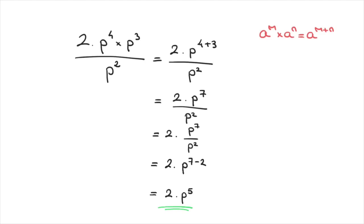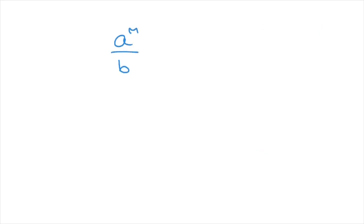Notice that the division rule — a to the power of m over a to the power of n equals a to the power of m minus n — deals with powers of the same base. But what happens when we divide powers of different numbers? If we have a to the power of m over b to the power of n, this cannot be simplified any further. There is no nice formula; it simply equals itself: a to the power of m over b to the power of n.